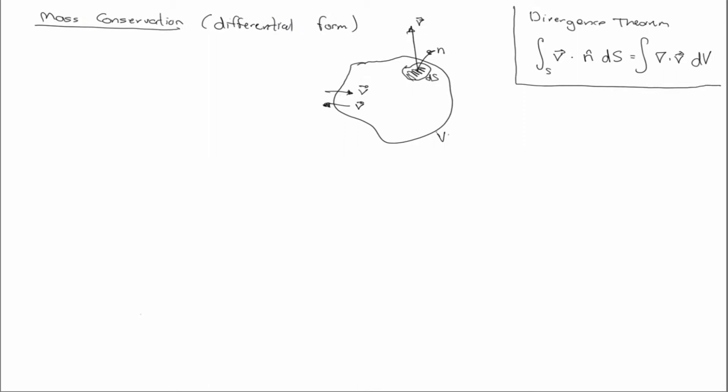So the total mass in the body, this is in the current configuration like we wrote before. So the total mass is equal to integral of rho dV. And just to be explicit, rho is a function of little x.